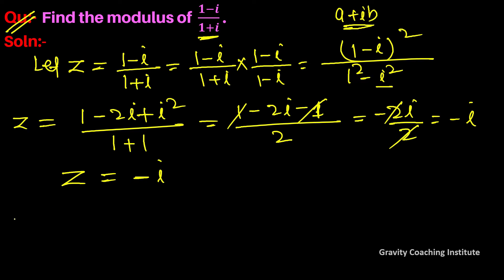z equals minus iota. Therefore, modulus of z... We need to change this to a plus iota b form, so this becomes 0 minus iota.